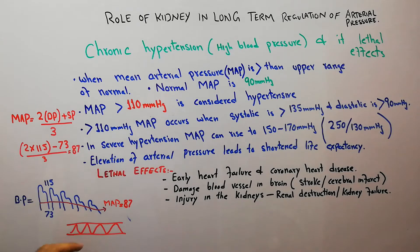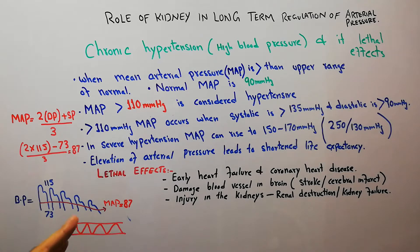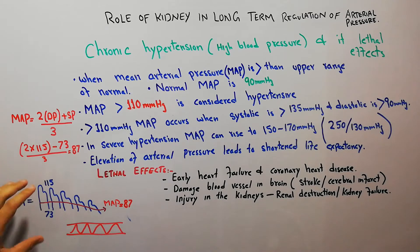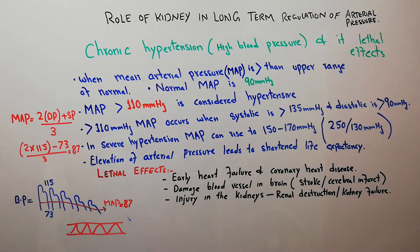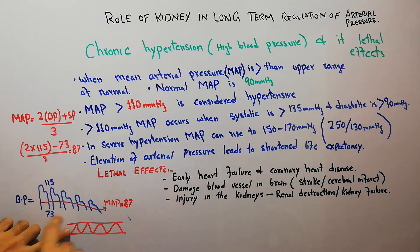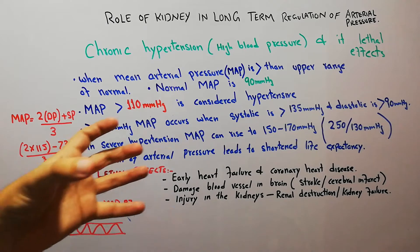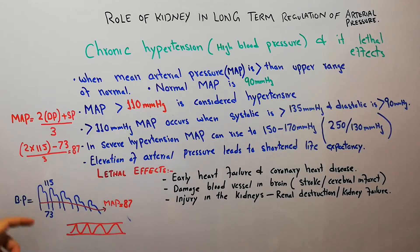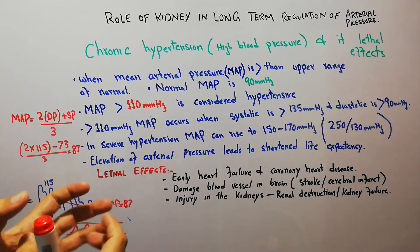Blood pressure can be measured with the help of a sphygmomanometer, or blood pressure machine. This pressure on the walls of the blood vessels increases in systole when the heart contracts, and decreases in diastole when the heart relaxes.